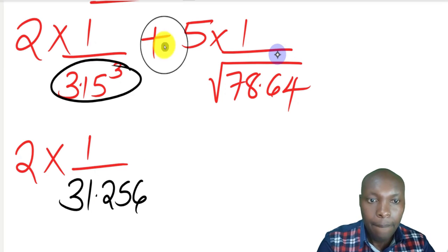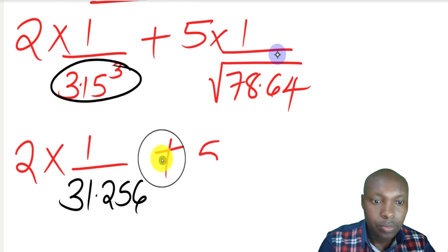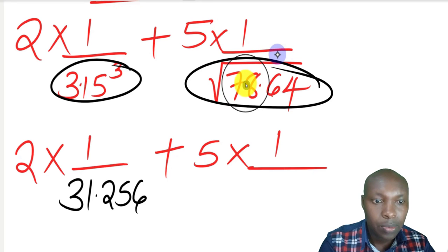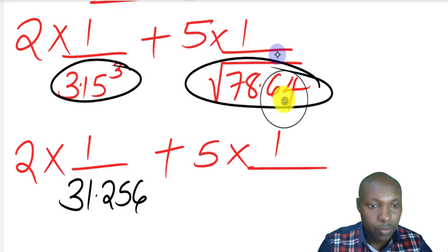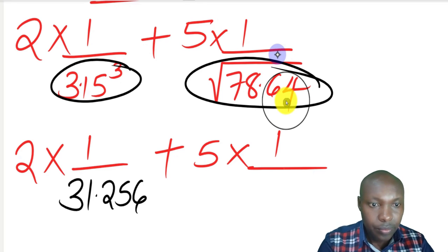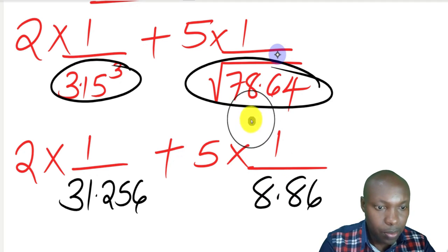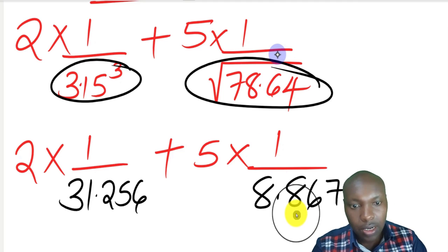Then add 5 multiplied by... we can get the square root of 78.64 directly from the table. We can read that one from the table directly, since the table of square roots runs from 1 to 99. This one is 8.8679.